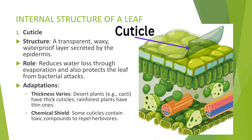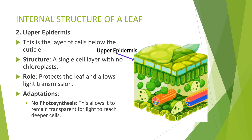2. Upper epidermis: below the cuticle is the upper epidermis, a single layer of cells without chloroplasts. It protects the leaf and allows light to pass through to the cells below. No photosynthesis takes place in this layer, which allows it to remain transparent for light to reach deeper cells.